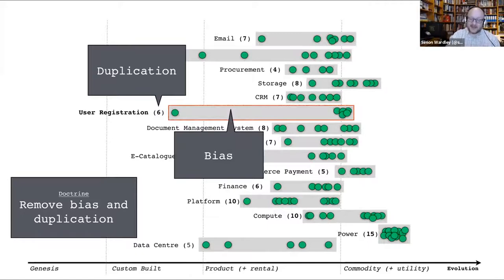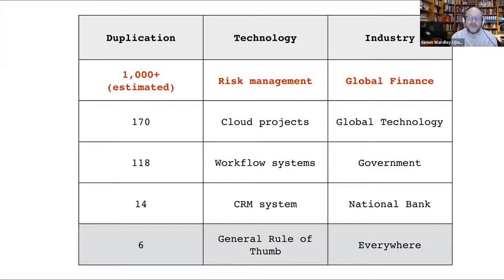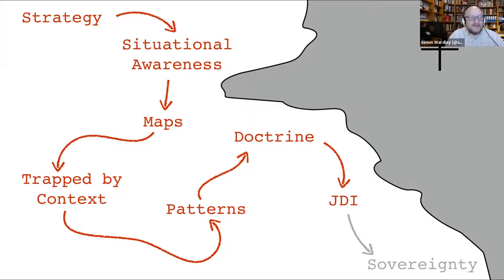Before anyone thinks this is an attack on government — the worst he's found in government is 118 workflow systems doing the same thing. That's nothing compared to the private sector. One pharma company has 350 teams building enterprise content management systems, with five global efforts building a global ECM system, none of which know the others exist. One bank built risk management over a thousand times — they stopped counting. Government is actually a bastion of efficiency compared to what he sees in the private sector.